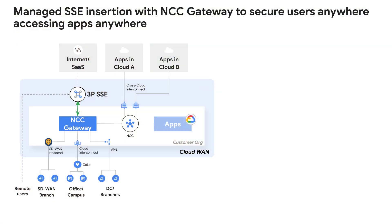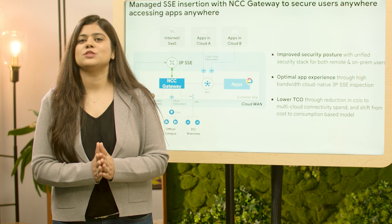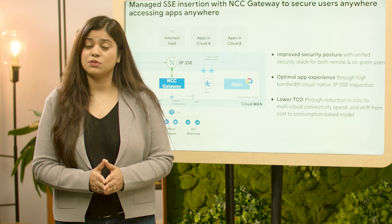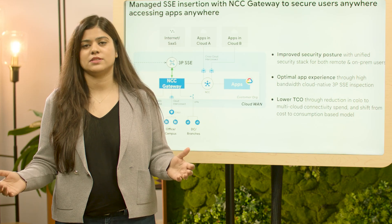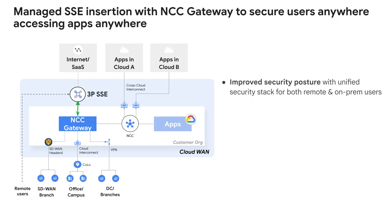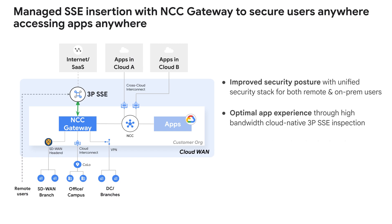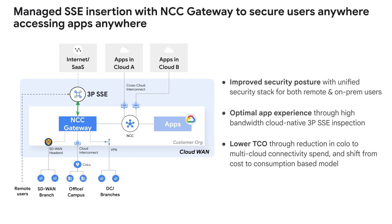To address this, we are launching NCC Gateway, which enables managed SSE insertion on traffic from hybrid connections such as interconnect, SD-WAN, and VPN. Our vision is to help customers consolidate their secure access controls on SSE for both remote and on-prem users. This brings three key benefits to enterprises. First, enterprises can establish a unified security stack for all users. Second, enterprises can enhance application performance by bringing branch traffic over private connections like interconnect to Cloud WAN for high-bandwidth cloud-native SSE inspection. Third, enterprises can realize TCO savings by reducing colo-to-multi-cloud connectivity spend and shifting to a consumption-based model.